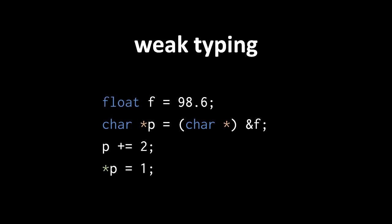You may recall that we said C is a weakly typed language. Here's an example of what that means. Here we have a float variable F, to which we assign the value 98.6. We then have a char pointer variable P, to which we assign the reference of F cast to a char pointer, such that the value of P now represents the address of the first byte of the float variable F.